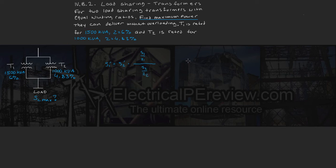Similarly, transformer 2's contribution S2' is equal to S1' times the ratio of (S2/Z2) divided by (S1/Z1).